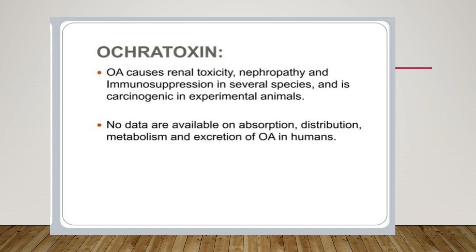Ochratoxin causes renal toxicity, nephropathy, and immunosuppression in several species, and is carcinogenic in experimental animals. No data are available on absorption, distribution, metabolism, and excretion of ochratoxins in humans.